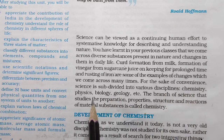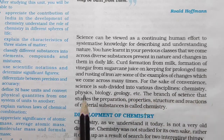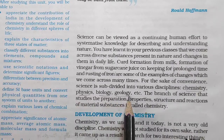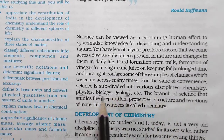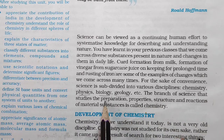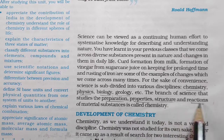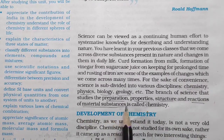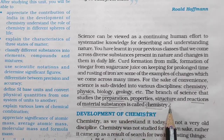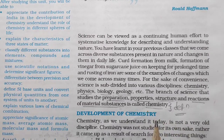For the sake of convenience, science is subdivided into various disciplines: chemistry, physics, biology, and geology. The branch of science that studies the preparation, properties, structures, and reactions of material substances is called chemistry. This is one definition of chemistry we can write.